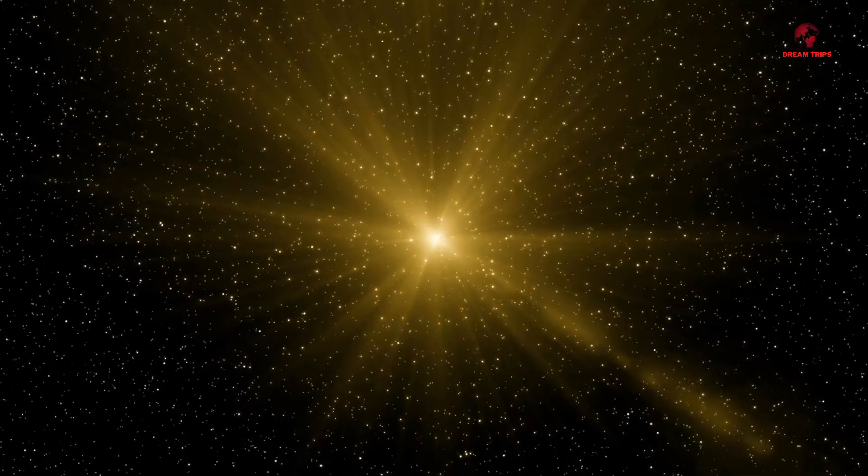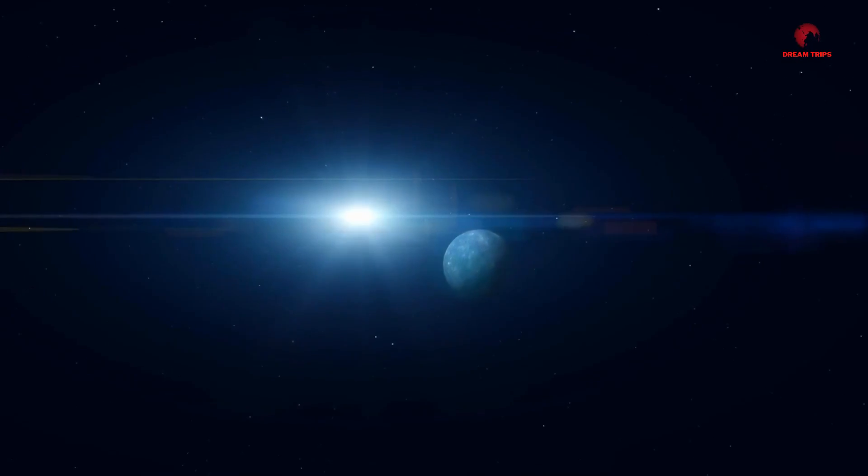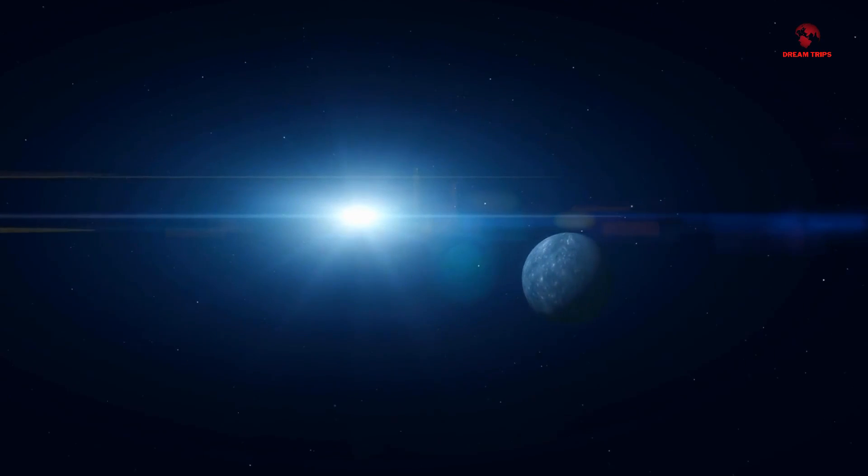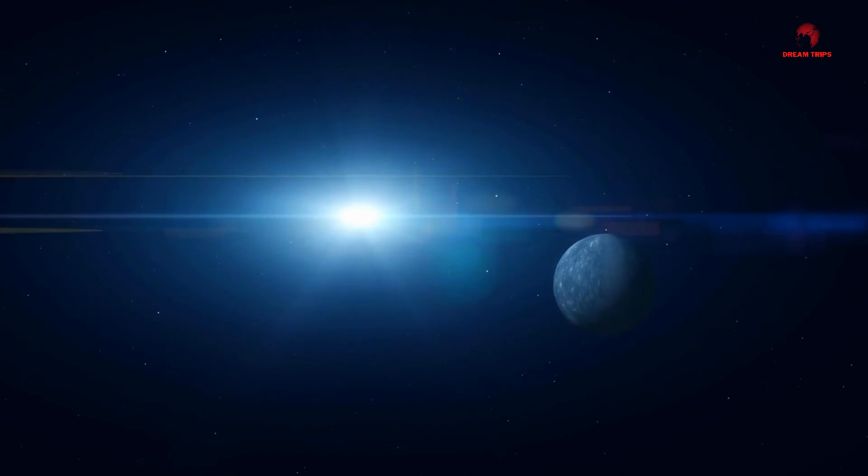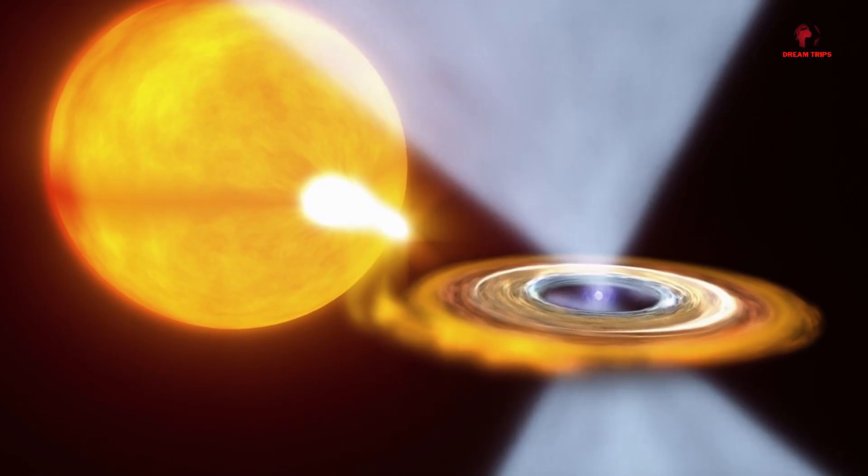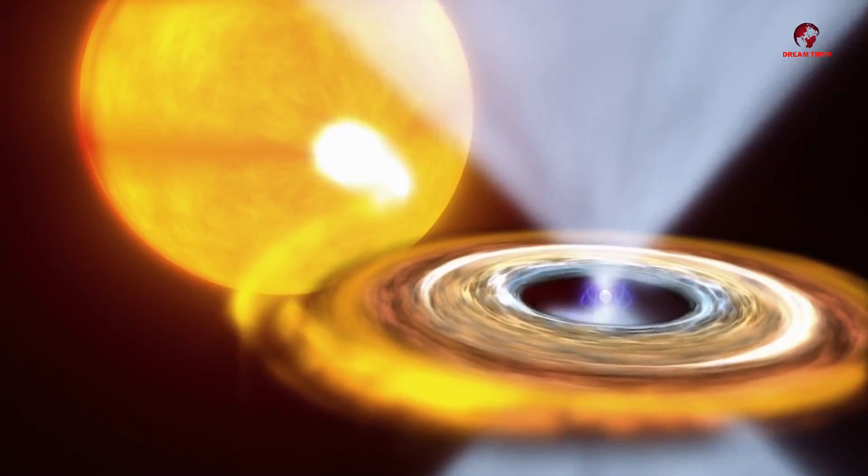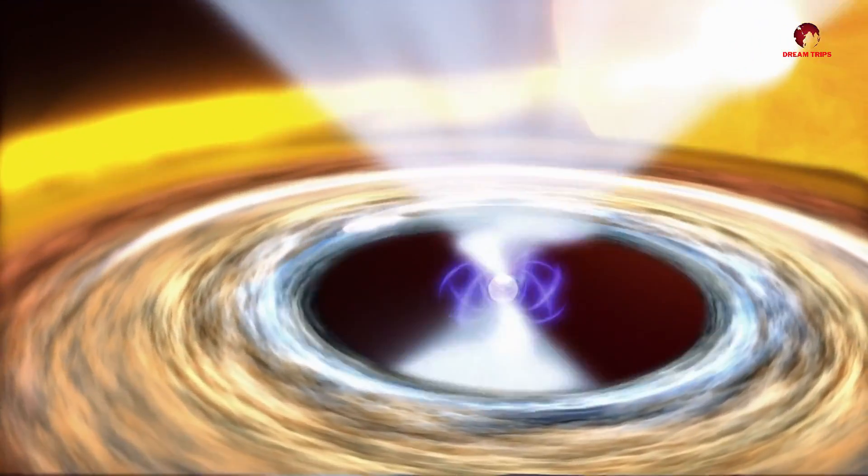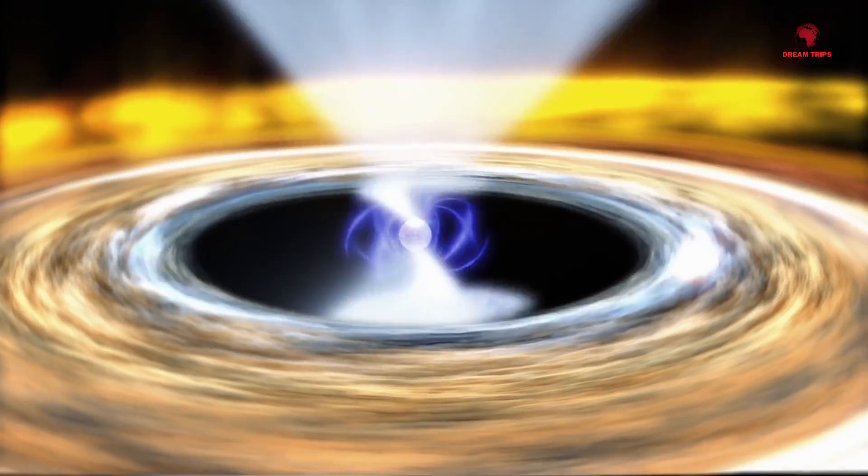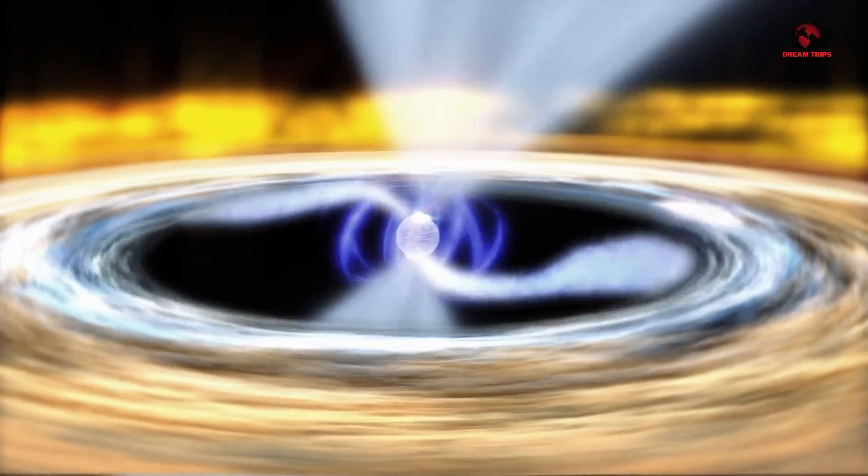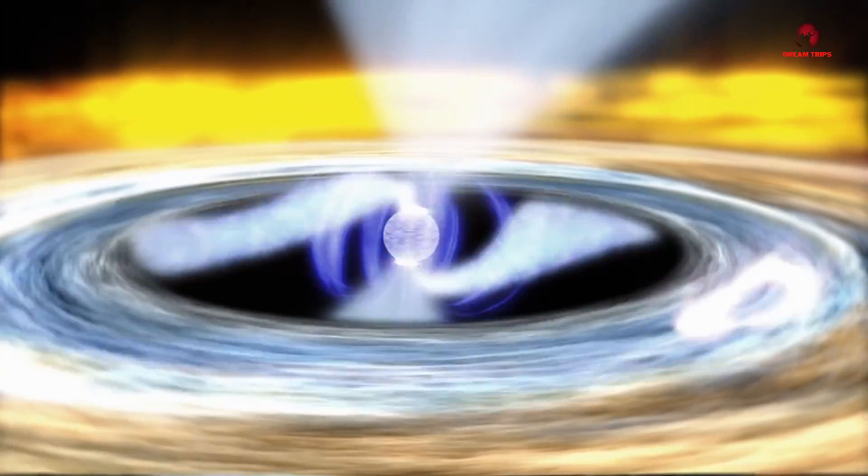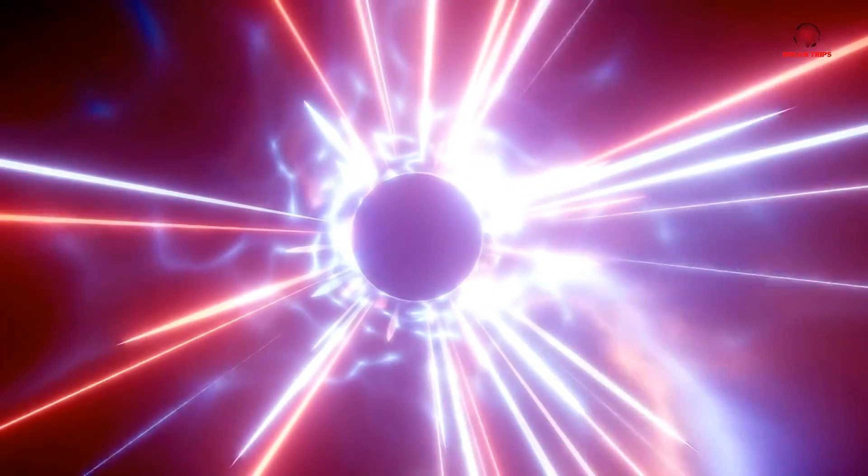Firstly, the habitable zone around UY Scuti, where a planet could theoretically support liquid water, would be vastly further out, extending billions of kilometers from the star, much farther than the distance between the sun and Pluto. Any planet within this zone would experience a significantly reduced day-night cycle, or none at all depending on its orbit, leading to extreme temperatures across its surface. Furthermore, the gravitational effects of such a massive star could result in intense tidal forces, potentially rendering any orbiting planet geologically active, or even tearing it apart if it ventured too close.